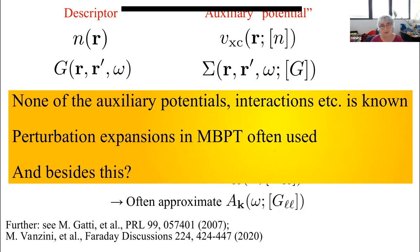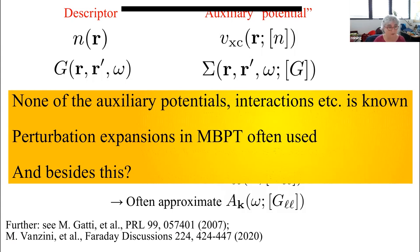What is common to all of this is that we do not know in principle any of these auxiliary potentials — sometimes we also have auxiliary interactions, we just don't know them. We have sort of shifted the problem. We have some ideas of how to get them — for example in the Green's function world we often use many-body perturbation theory — but we stop at low order, and these are still rough approximations.